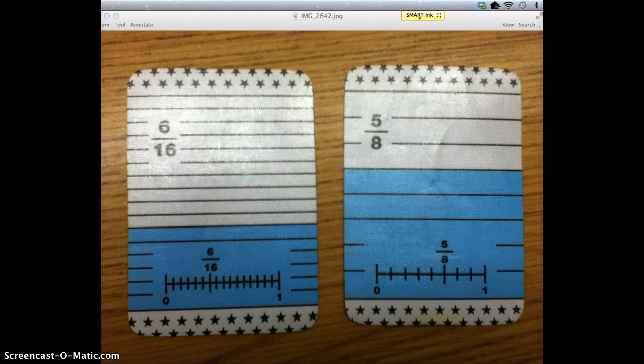At the end, the person with the most cards is the winner. So if these were the two cards that were turned over, the one with 6 sixteenths and the one with 5 eighths, who's going to win?